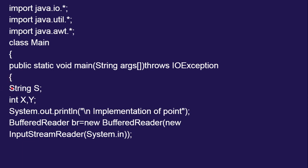We open the brace and declare String s — we are creating an object called s of the class String. Then we declare int x and y as two variables. Then System.out.println displays the message 'Implementation of Point' on the screen.